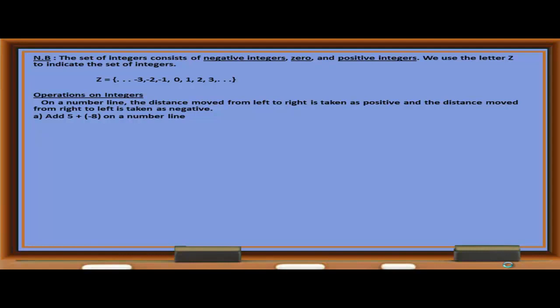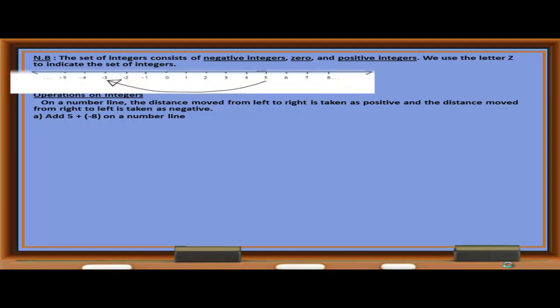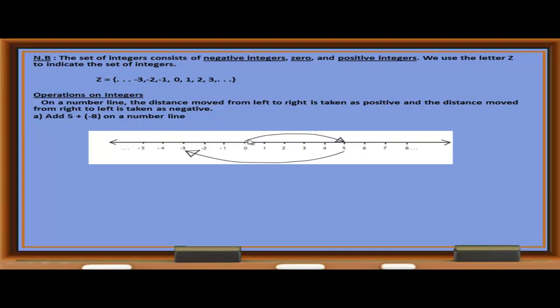Example A: Add 5 + (negative 8) on a number line. We move 5 units from 0 to the right, then move 8 units to the left. Therefore, the answer to 5 + (negative 8) is negative 3.